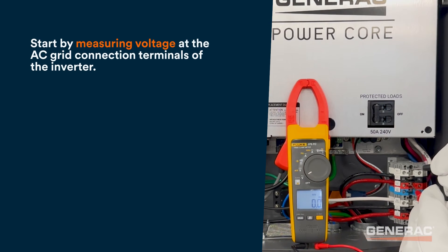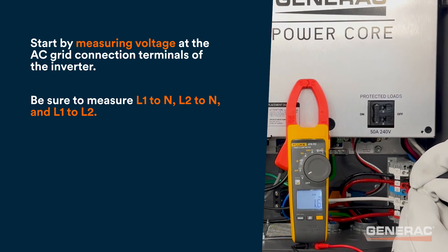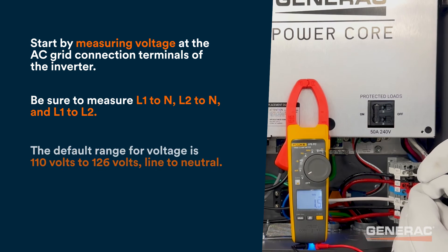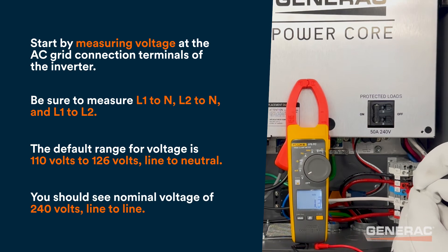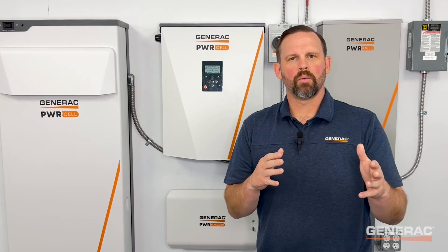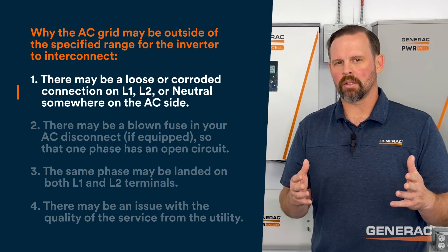Start by measuring voltage at the AC grid connection terminals of the inverter. Be sure to measure line 1 to neutral, line 2 to neutral, and line to line. The default range for voltage is 110 volts to 126 volts line to neutral, and you should see a nominal voltage of 240 volts line to line. If voltage is drastically low or non-existent when measuring line to neutral or line to line, you likely have a faulty connection.